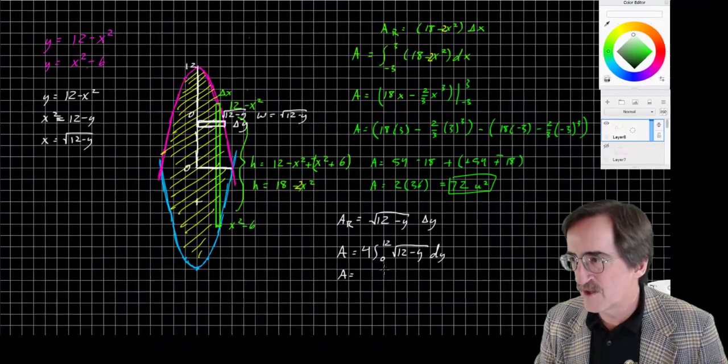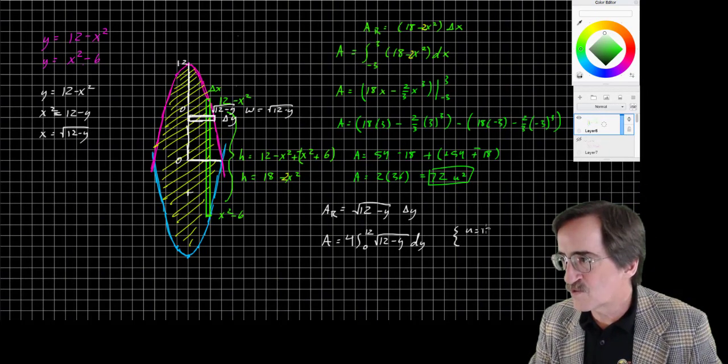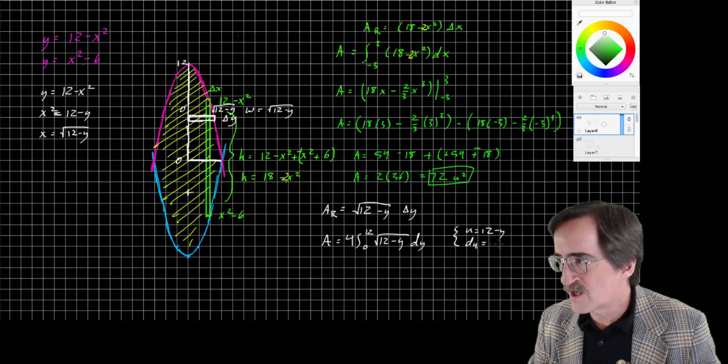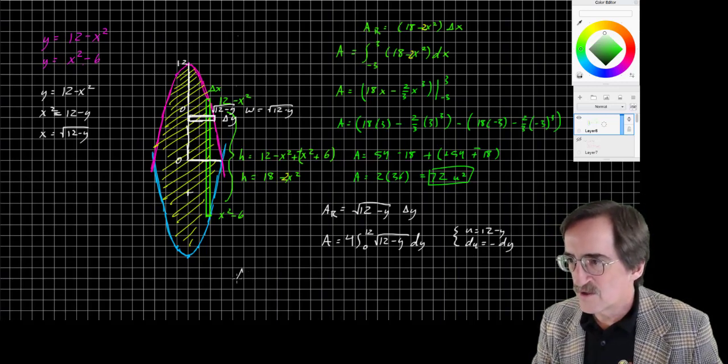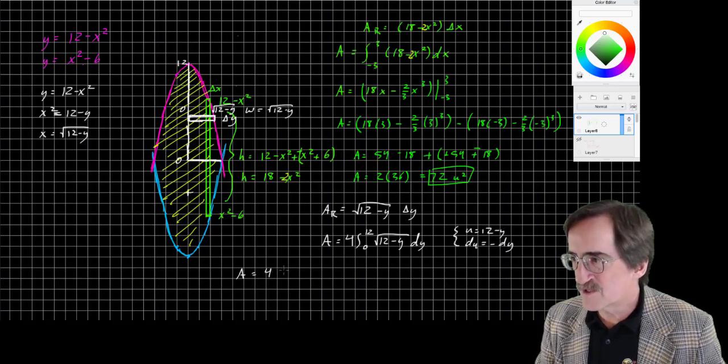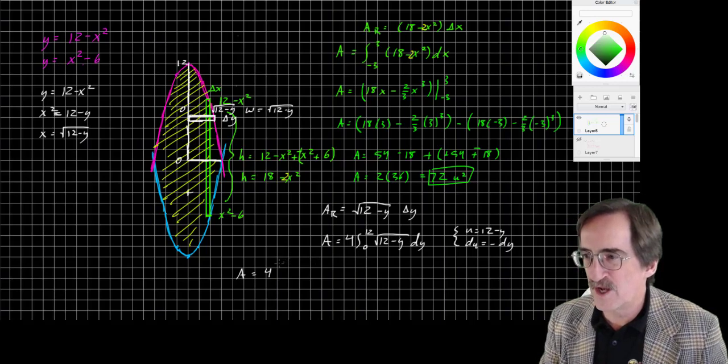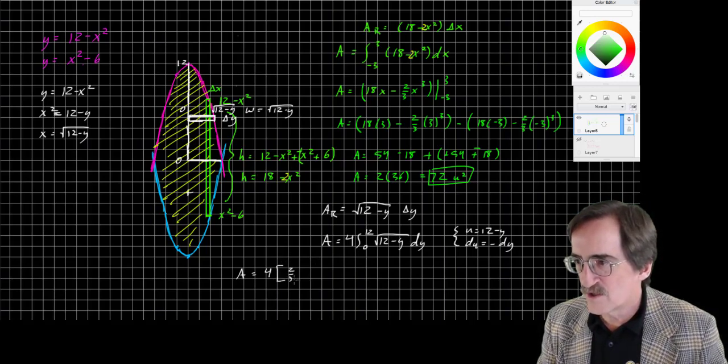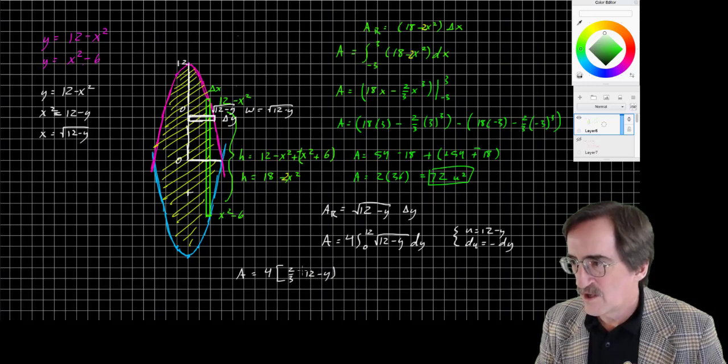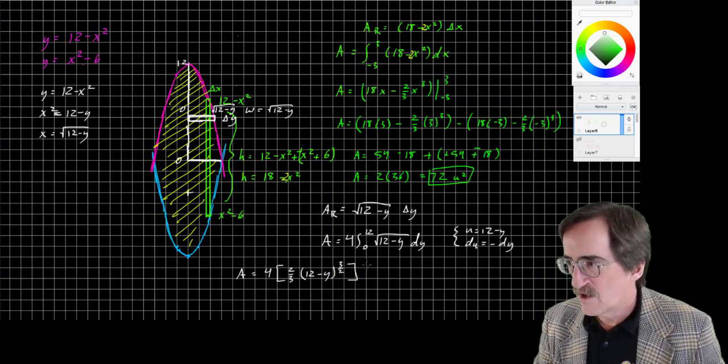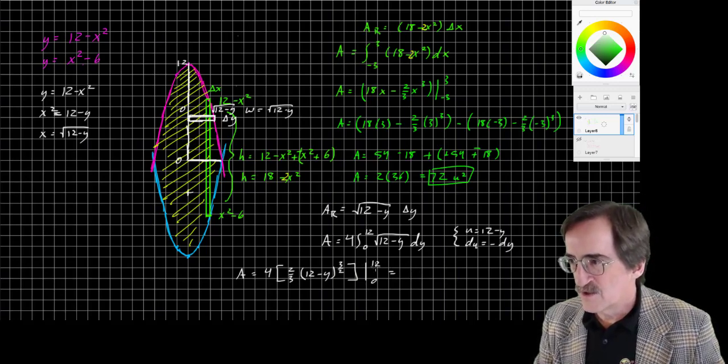All right, let's see if we can figure this out. So a little u substitution. If u is 12 minus y, then du is negative dy. So we just basically need to include a negative sign here. A equals 4 times the integral of x to the 1 half is x to the 3 halves, divided by 3 halves, or 2 thirds. So 2 thirds, root 2 thirds of 12 minus y to the 3 halves. From 0 to 12. Let's see what that comes out as.